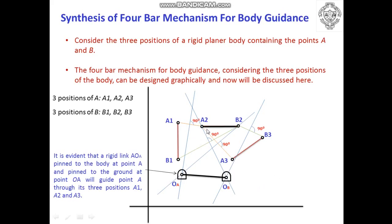Considering the second configuration of the four-bar mechanism, we join OA with A2 as the second configuration of the input crank, A2B2 is the second configuration of the coupler, and OB with B2 is the second configuration of the output crank. To show the first configuration, join OA with A1 and OB with B1. The third configuration is obtained with A3 and B3.